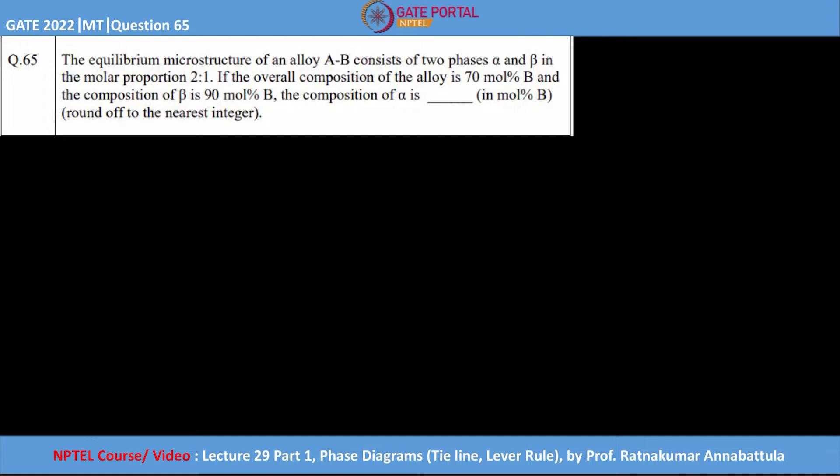Hello all, this is one more question from GATE 2022, question number 65. The equilibrium microstructure of an alloy AB consists of two phases alpha and beta in the molar proportion 2 to 1. That means the fraction of alpha to beta, I can write F_alpha by F_beta, will be equal to 2 by 1.